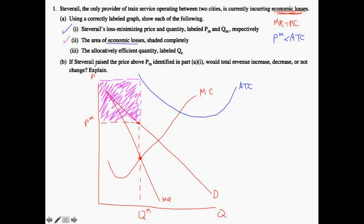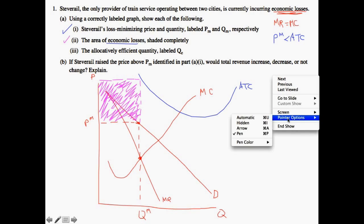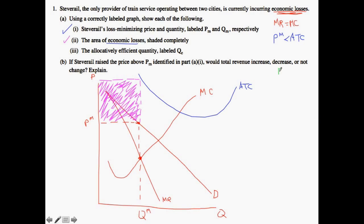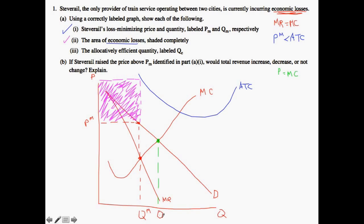That covers part two. Finally, we need to label the allocatively efficient quantity — this is your classic P equals MC situation. What we need to do is show price equal to marginal cost, in other words demand equals marginal cost. So the demand curve will intersect the marginal cost curve right here, and therefore this point would be where the efficient quantity QE is.